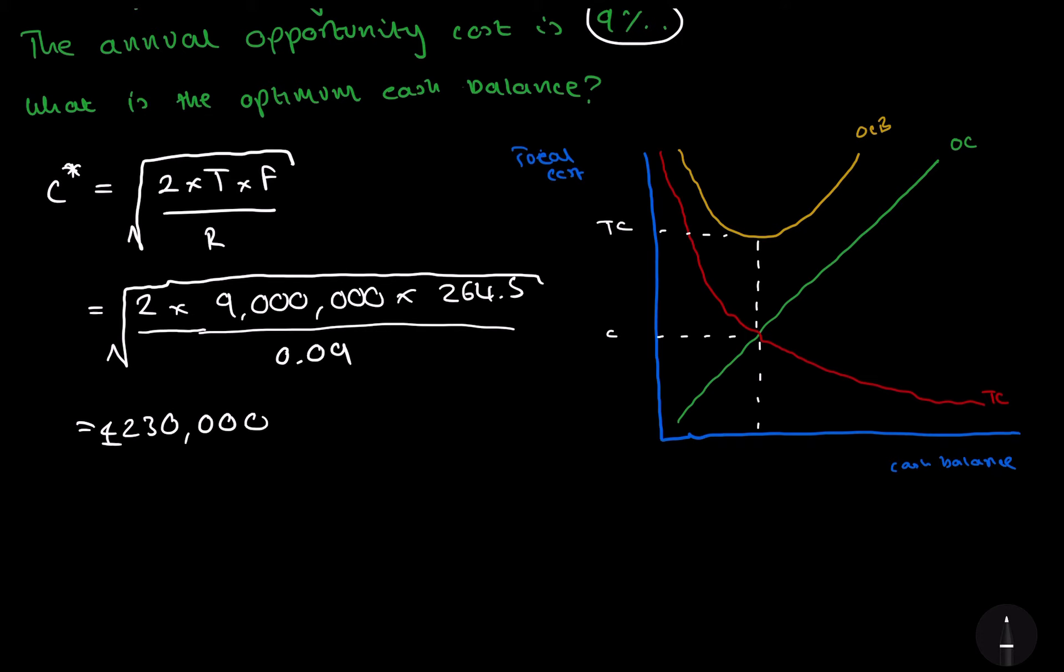And then this is our singular cost. So we can have C over 2 if we want, or TC over 2. And then this is our cash balance, our optimum cash balance. And if we were to bring this into the example we just did, this would be £230,000.